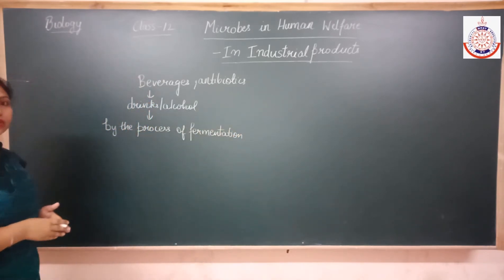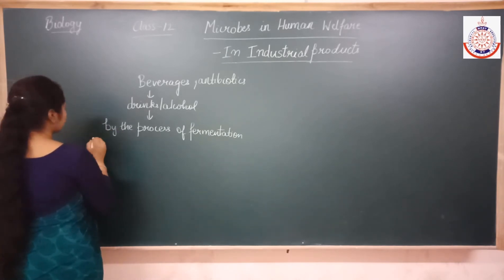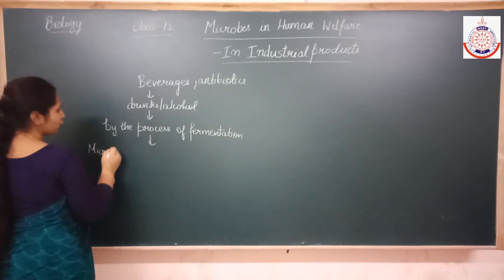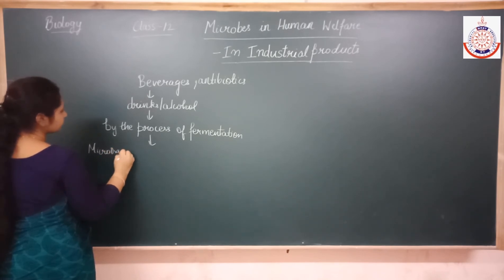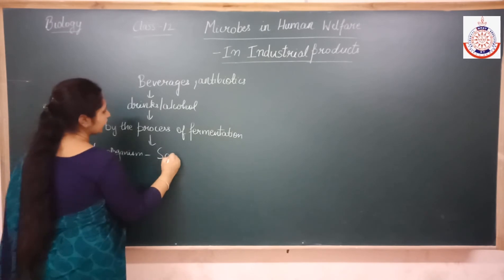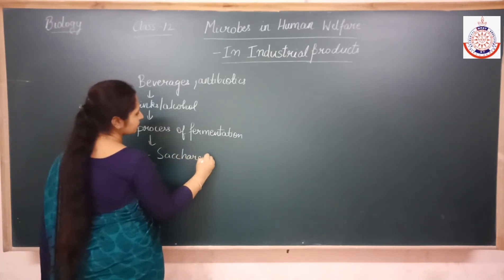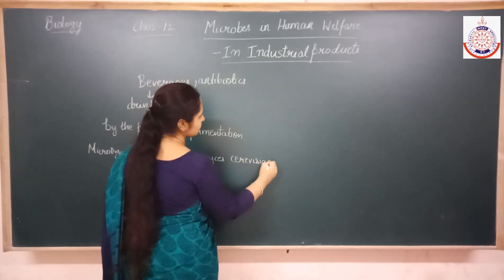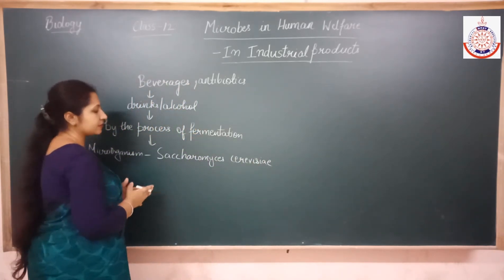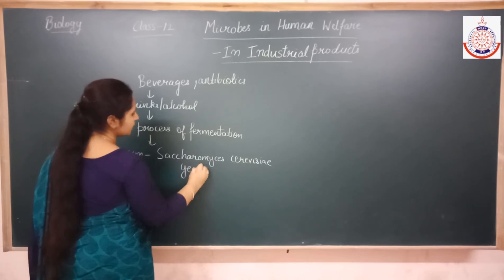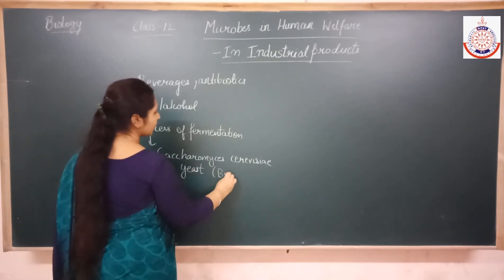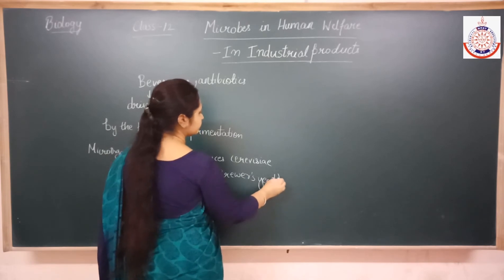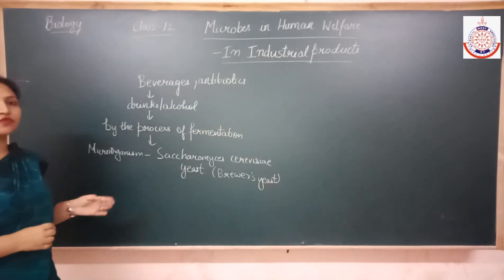The various drinks and alcohol can be produced by a microorganism — that is Saccharomyces cerevisiae, the same microorganism which is used for making bread. This is an example of yeast and it is also known as the brewer's yeast.